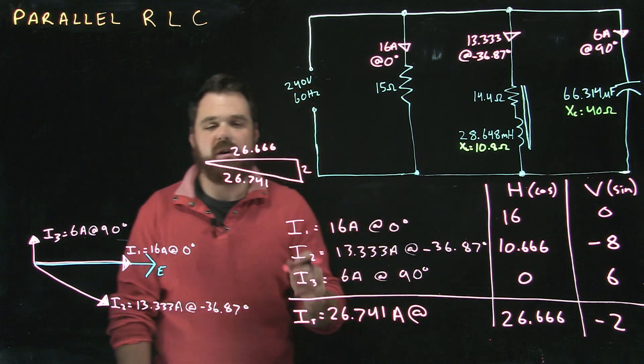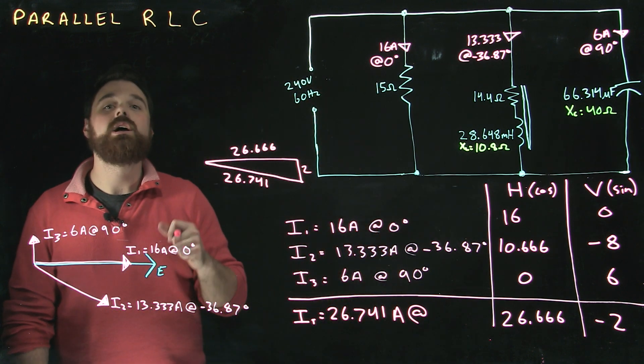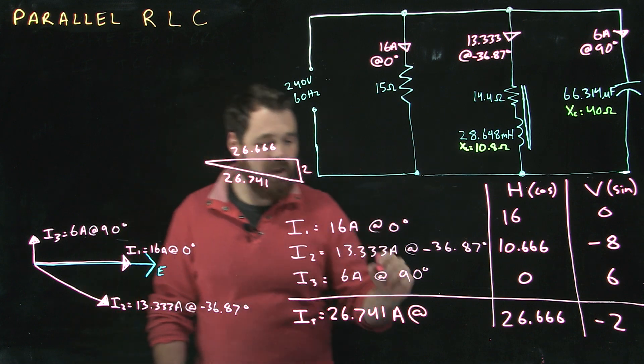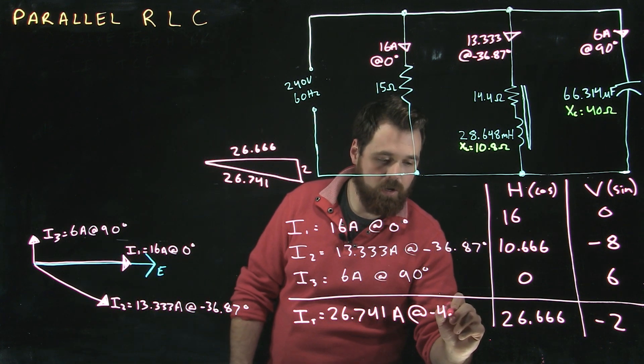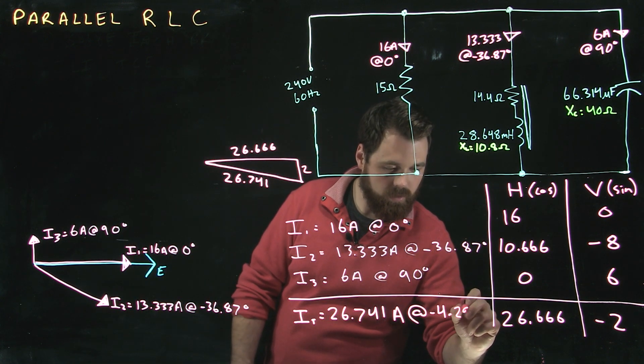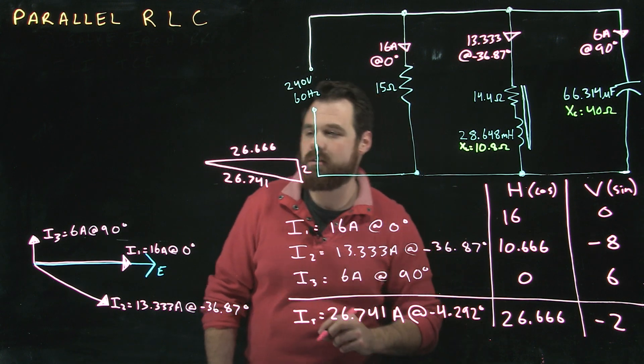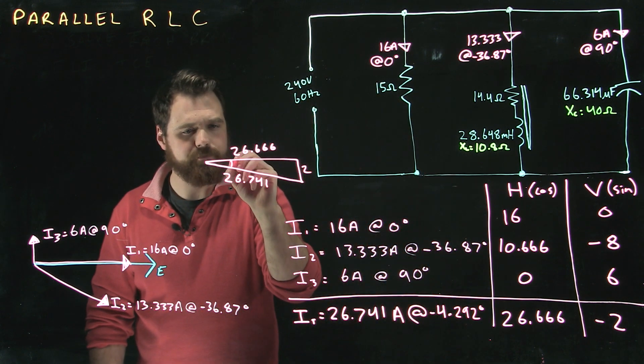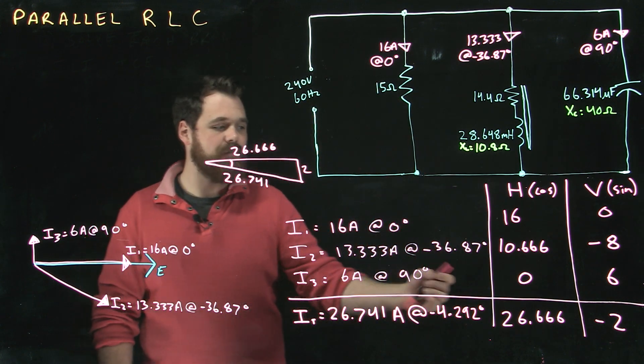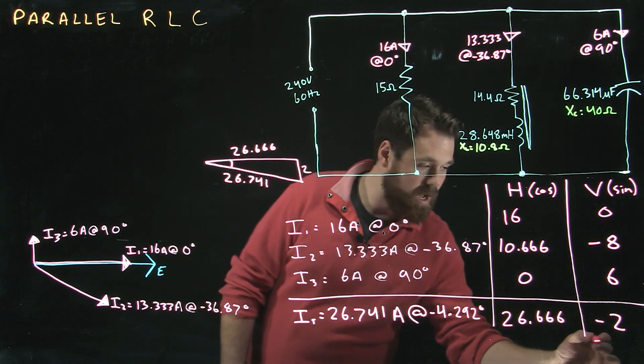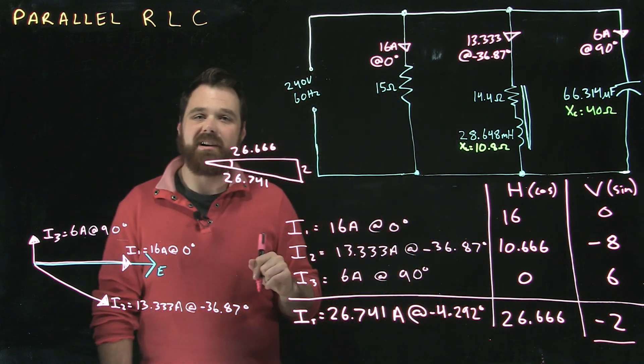To figure out our angle we use any one of our SOHCAHTOA functions and we should get negative 4.292 degrees. So that's this guy right in here. And the reason I know it's negative is because my total out of phase voltage is a negative value.